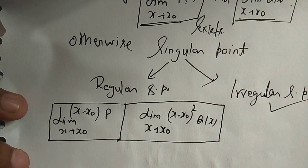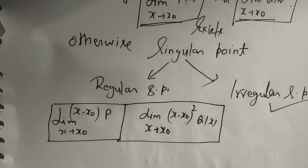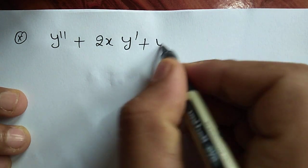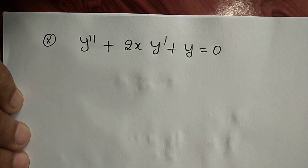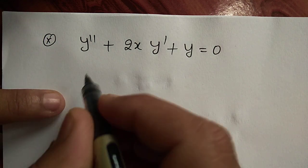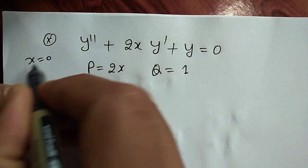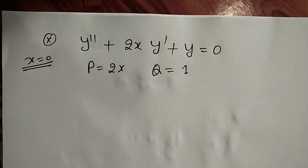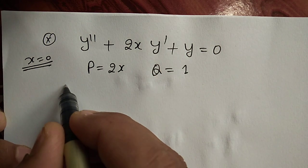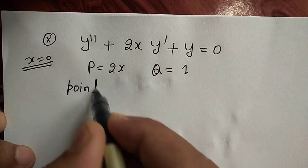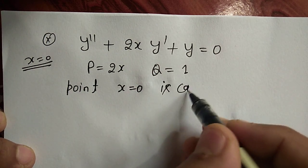Now let us see an example of an ordinary point. Consider the differential equation y'' + 2x y' + y = 0. This equation is already in standard form, so capital P = 2x and Q = 1, and the point given is x = 0. It is obvious that P and Q are defined at x = 0 and the limits also exist — the limit of P is 0 and Q is always 1. Therefore, the point x = 0 is an ordinary point.